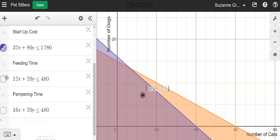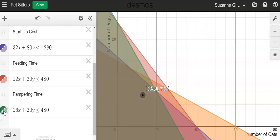All right, so in the tasks earlier, we added a constraint for feeding time and for pampering time. And now we have a lot of inequalities.